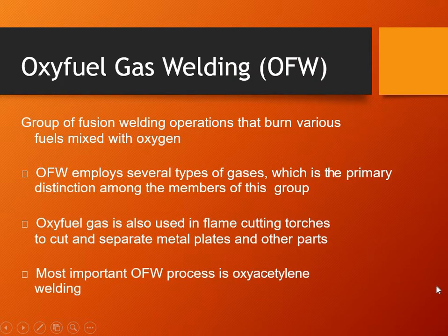What is oxy-fuel gas welding? It is a group of fusion welding operations. The oxy-fuel gas welding is also in the classification of fusion welding. It is a combustible gas — a fuel gas — that we mix with oxygen. It is combustible, and we use the heat from combustion to perform welding operations. Oxy-fuel welding employs several types of gases. Amongst the members of this group, we use acetylene gas — that is the scientific name, ethane gas. Oxy-fuel gas is also used in flame cutting torches to cut and separate metal plates and other parts.